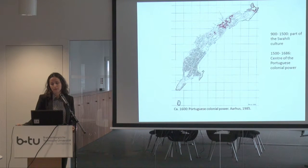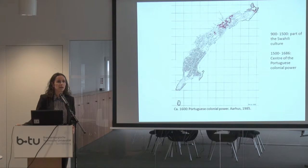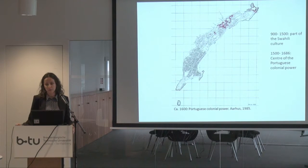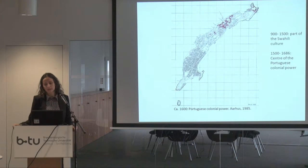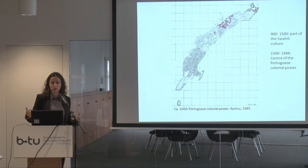Before the Portuguese, the island of Mozambique was part of the Swahili culture and Swahili trade routes. It was connected with Lumbo, Zanzibar, and was one of the most important trading ports for gold and ivory from the Arabs. In the period 1515 to 1685, it was the centre of Portuguese colonial power — they overtook power from the Arabs and the trade.